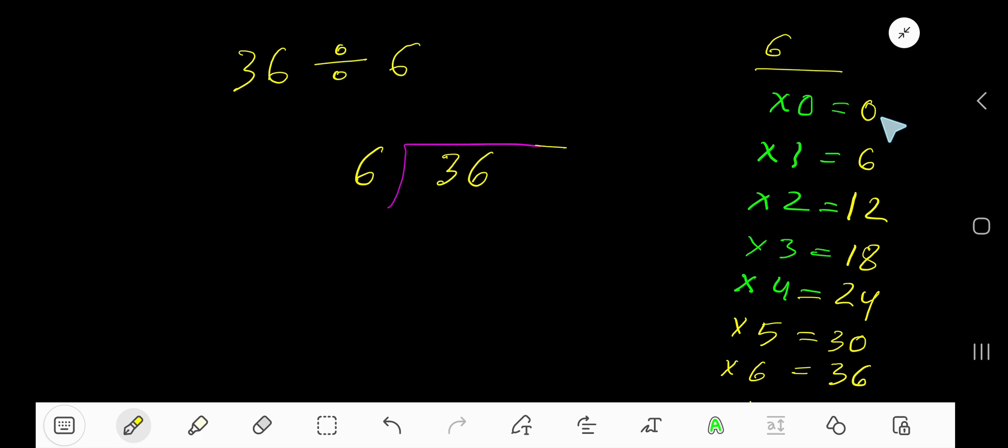You need to add 6 with the previous step. That is 0 plus 6 is 6, 6 plus 6 is 12, 12 plus 6 is 18, 18 plus 6 is 24, 24 plus 6 is 30, 30 plus 6 is 36. So this is the trick, right?